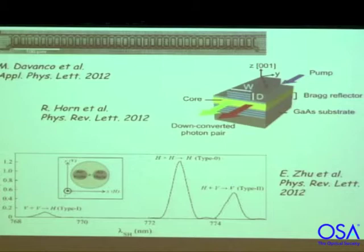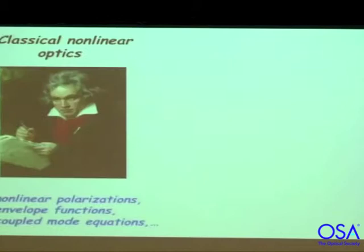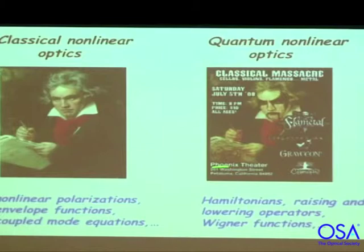The obvious question is: can we learn anything about the quantum nonlinear process by looking at the corresponding classical process? You might say yes — we have one theory for nature. But for people working in the field, it's not been obvious because totally different mathematical tools and formalisms are involved. In classical nonlinear optics one talks about nonlinear polarizations, envelope functions, and coupled-mode equations. Whereas in quantum nonlinear optics it's Hamiltonians, raising and lowering operators, Wigner functions, and so on. The language has been very different, and there have largely been two different communities working on these two kinds of problems.